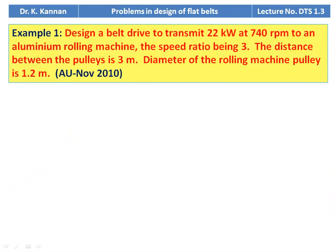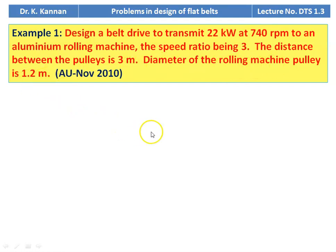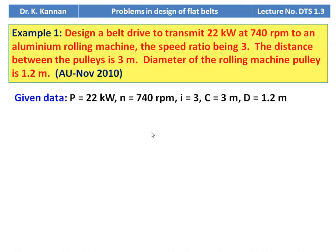First example from the November 2010 question paper, Anna University: Design a belt drive to transmit 22 kilowatt at 740 RPM to an aluminum rolling machine. The speed ratio is 3. The distance between the pulleys is 3 meters. The diameter of the rolling machine pulley is 1.2 meter. The motor speed is 740 RPM, so the rolling machine runs at a slower speed than the motor.